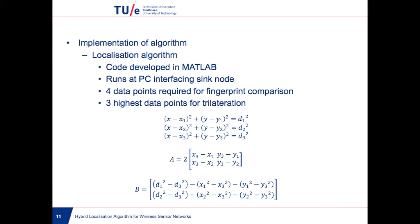For trilateration calculation, only the three strongest signals from the four anchor nodes are used. In the formulas shown, x1, y1, x2, y2, x3, y3 are the coordinates of three anchor nodes.